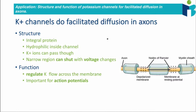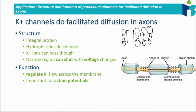The structure of the potassium channel is that it's an integral protein, meaning it's embedded into the membrane. It has a hydrophilic core, meaning that the inside of the channel — so if we draw the channel out here — the inside of the channel is going to be hydrophilic, which is why the potassium ions are able to move through it. This channel is able to change its permeability to potassium in response to changes in voltage. The function of this potassium channel is therefore to regulate the flow of potassium across the membrane, which is essential for action potentials to launch.